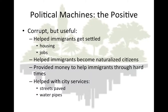While the political machines were corrupt, they did play a useful role. They helped immigrants settle into their new homeland, find housing, and obtain new jobs. They also helped immigrants become naturalized citizens and even provided money to help them through hard times. The political machines were often the ones to get a street paved, extend a water pipe, or approve construction — but these services came at a very high price.